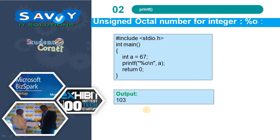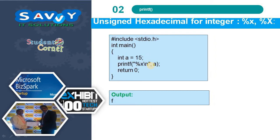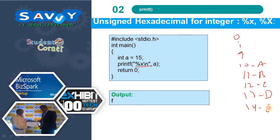For octal, take a variable a with some value and use %o — the equivalent octal value will automatically be displayed. For hexadecimal, the value 15 is equivalent to f, since the mapping is 0 to 9 for digits, then a for 10, b for 11, c for 12, d for 13, e for 14, and f for 15. So %x prints the value f.